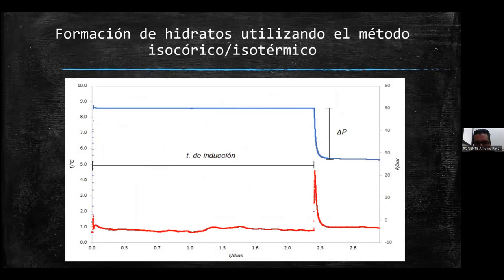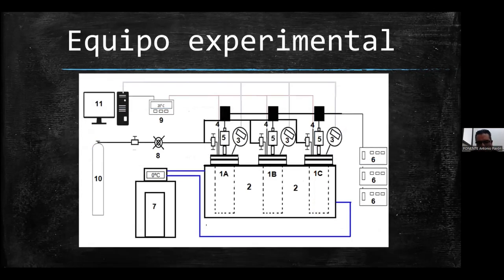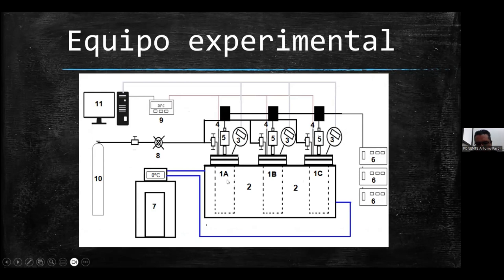La formación de hidrato en este trabajo se realizó con el método isocórico. Antes de empezar cada experimento, las celdas tuvieron que estar cargadas: la celda 1 con 1,500 ppm, la celda 2 con 2,000 ppm y la celda 3 con 2,500 ppm. Una vez cargadas, se cierran hermétricamente, se retira el aire y se conectan el manómetro y el termómetro. Una vez listo el equipo, se procede a realizar la formación del hidrato.